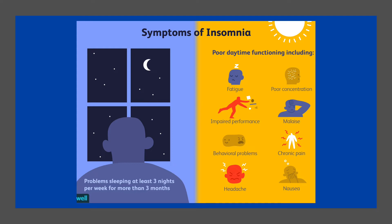Diagnosis of insomnia is based on sleep habits and an examination to look for underlying causes. A sleep study may be done to look for underlying sleep disorders. Screening may be done with two questions: do you experience difficulty sleeping, and do you have difficulty falling or staying asleep? Between 10 and 30% of adults have insomnia at any given point in time, and up to half of people have insomnia in a given year.